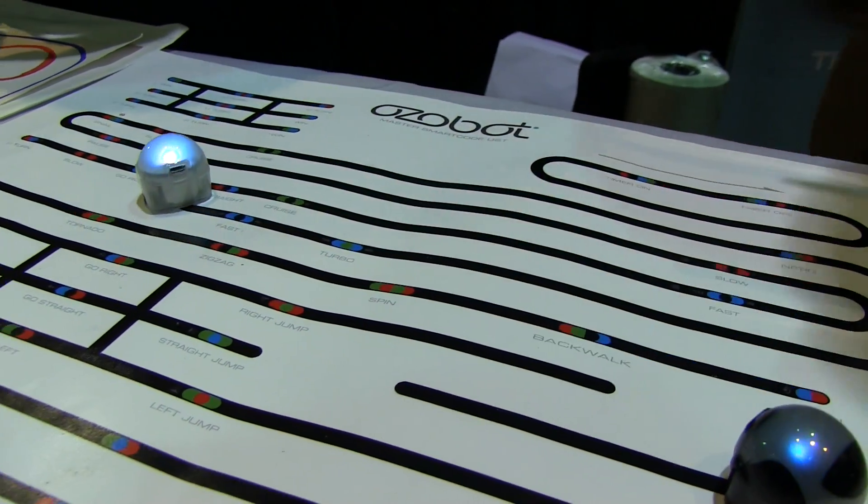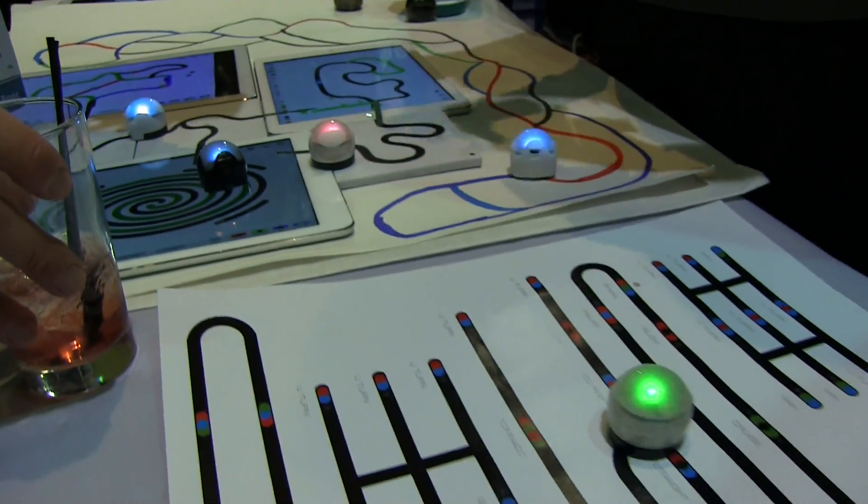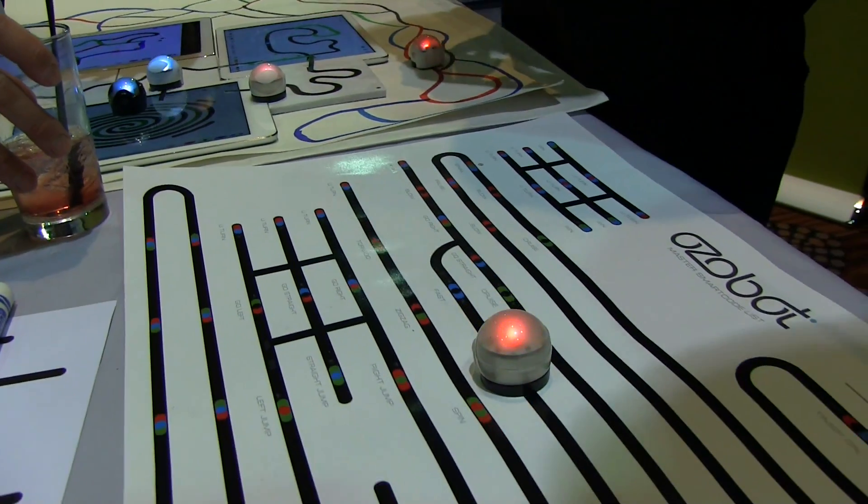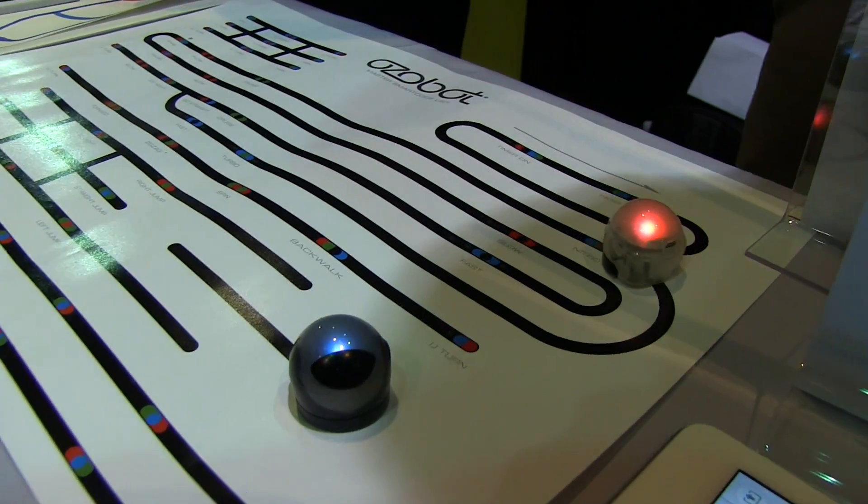So all these color codes have different behaviors pre-associated with it. That's the U-turn code right there which comes in handy at the end. It's really exciting. This version of Ozobot is out right now for $50.